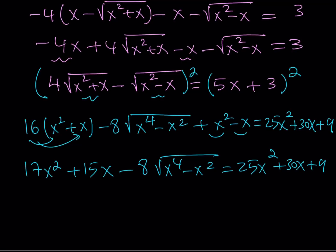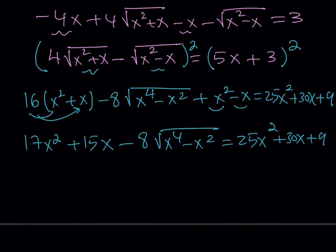Now this is what I'd like to do. I want to put everything on the same side and write it as a sum and set it equal to 0. Let's go ahead and put everything on the right-hand side. I'm going to be subtracting 17x squared from 25, so that's going to give me 8x squared. Subtract 15x from 30x, that's going to give you positive 15x. And then I don't have any constant terms on the left-hand side. The only constant I have is going to be 9. And I'm adding this radical term here to both sides. So that's going to give me plus 8 times the square root of x to the 4th minus x squared. And the whole thing is equal to 0.